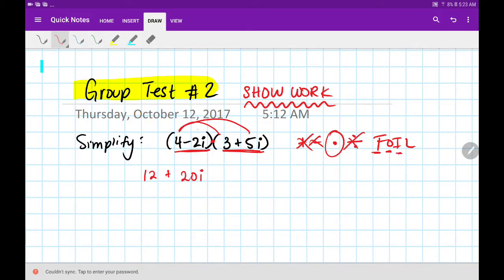Now, let's do the inside. Watch your signs. This is negative two I times three. So, it's going to be negative two times three is negative six, and then the I.